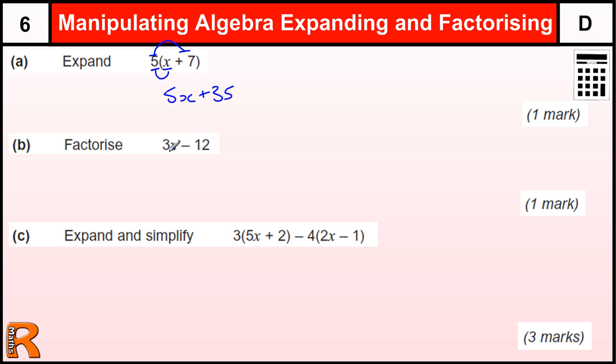Factorizing this, well there's only one letter here, there's not two letters, so the only thing that's going to go into both of these is a number. Factorizing means to put the brackets back in. So we're doing that, it's got a minus in between. What number goes into 3 and 12? Well that's 3.